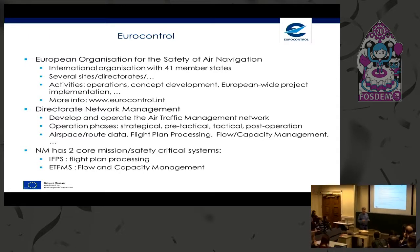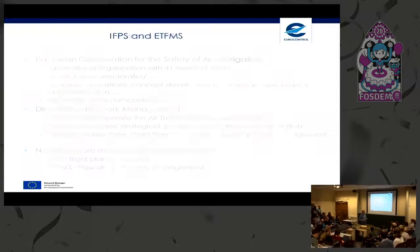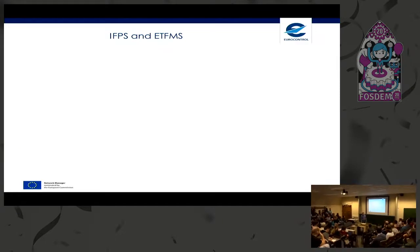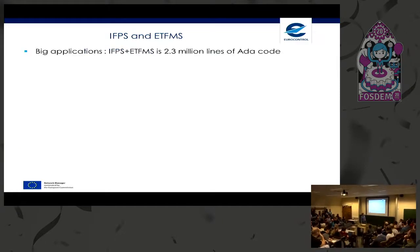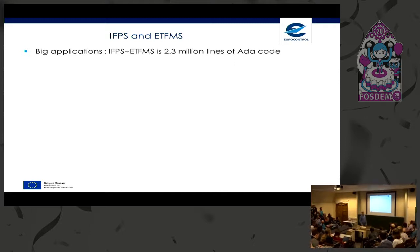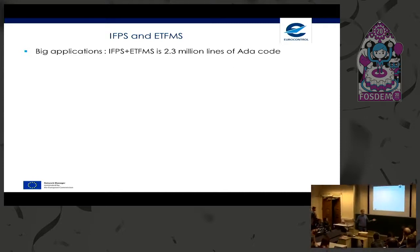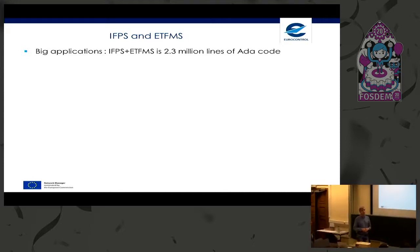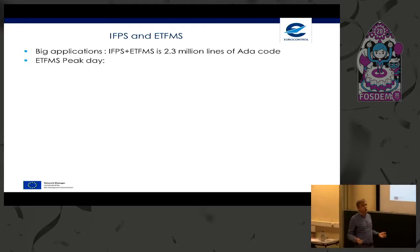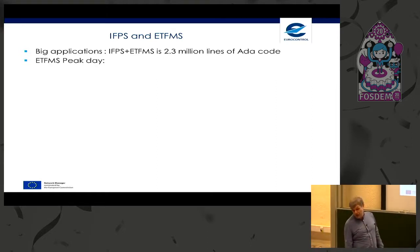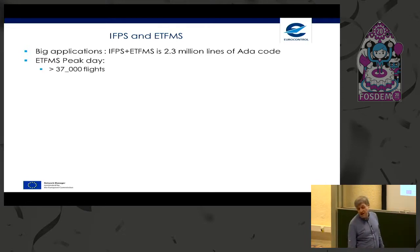ADA is by far the main language used — the core of the system is 99% ADA. The core is 2.3 million lines of code, with shell scripts around it for build infrastructure and monitoring, plus a lot of test code. In terms of capacity, on a peak day of ETFMS — the flow management system — in Europe we handle more than 37,000 flights.